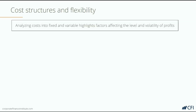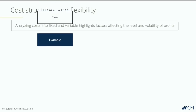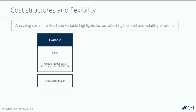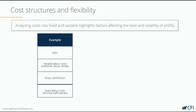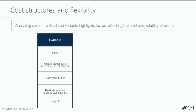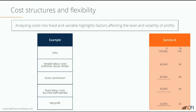There's operational leverage by having more fixed costs, but that also means more volatile earnings. So let's look at an example here. We're going to make a very simple income statement consisting of sales, variable cost, a contribution margin, fixed costs, and a net profit margin. Here we have Company A — it's got 40% variable cost: $40,000 of variable cost on $100,000 of sales, and $40,000 of fixed cost, so it has a net profit of $20,000 or a 20% margin.